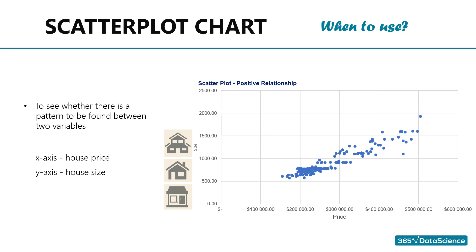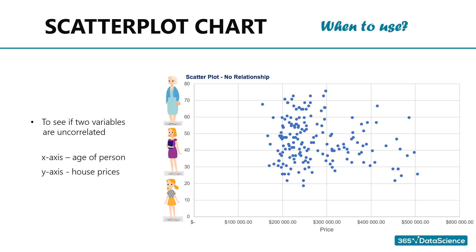A scatter plot chart is a great indicator that allows us to see whether there is a pattern to be found between two variables. See the example we have here? The x-axis contains information about house price, while the y-axis indicates house size. There is an obvious pattern — a positive relationship between the two: the bigger a house is, the higher its price. On the other hand, house size and the age of the person who bought a house are two uncorrelated variables, and a scatter plot helps us see that easily.